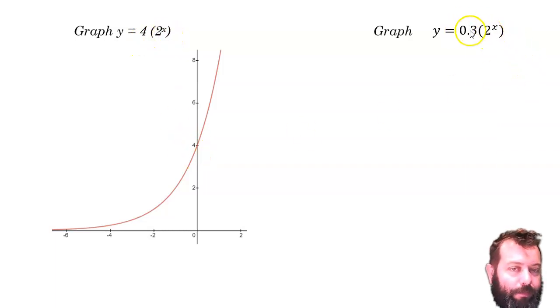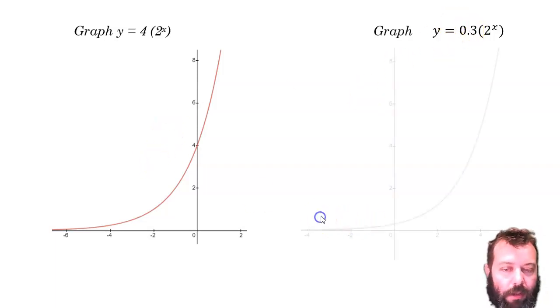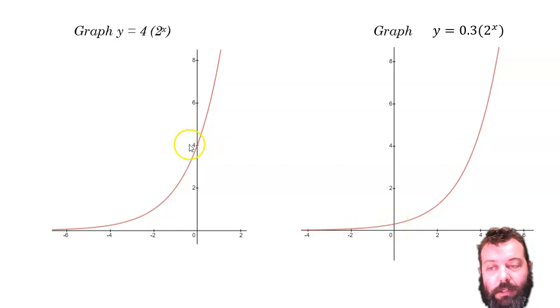Now, over here, my coefficient is between 0 and 1, but the base is still greater than 1. So I still get exponential growth, just slower than in this case. So you can see here, it takes longer to pick up, and my y-intercept is down here at 0.3 instead of at 4.